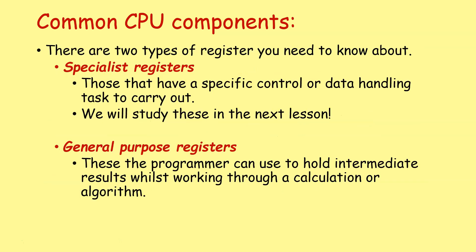There are two general types of registers that you need to know about. We've got specialist registers. These are registers that have specific control or data handling tasks to carry out, and we'll look at some of the more common ones in the next lesson. But you've also got general purpose registers, and these can be used by your program to hold intermediate results while working through a calculation or an algorithm.